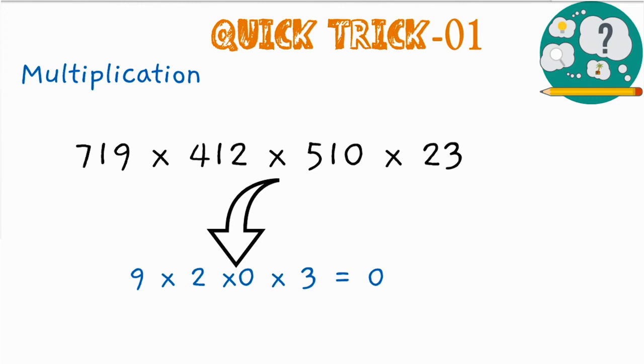Here we can conclude that in any product, if one or more than one numbers have a 0 in their units place, we can directly say that the units place value of such a product is 0.